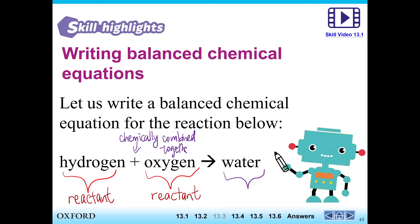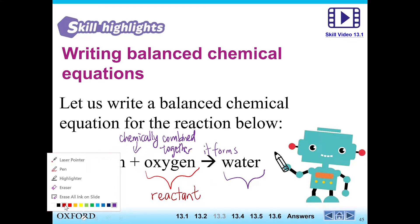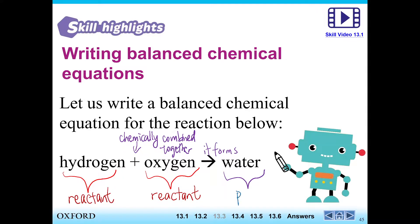This arrow over here means that when the two reactants are chemically combined together with the addition sign, it will form — so this arrow means 'forms.' Now what will it form? It will form on the right hand side of the equation what we call the product. The product is the substance that is produced. So now let's read this word equation again: you have one reactant, it is chemically combined with another reactant, and it will form the product.